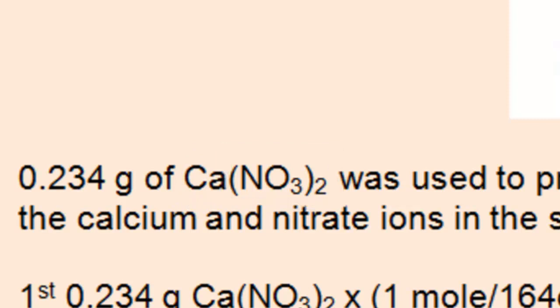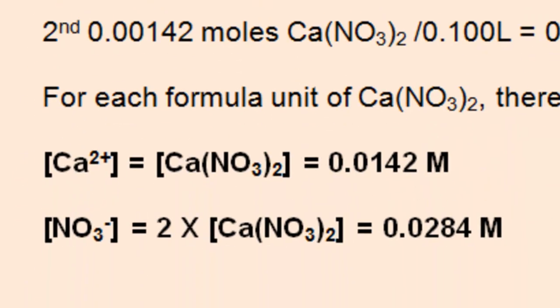So for every one unit of calcium nitrate, there's one calcium. That means the concentration of the calcium ion is the same as the molarity of the calcium nitrate compound. On the other hand, because there are two nitrates in the formula, the concentration of nitrate is twice the concentration of calcium nitrate.